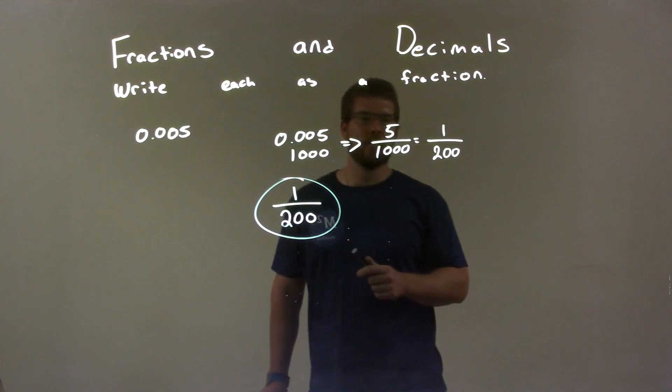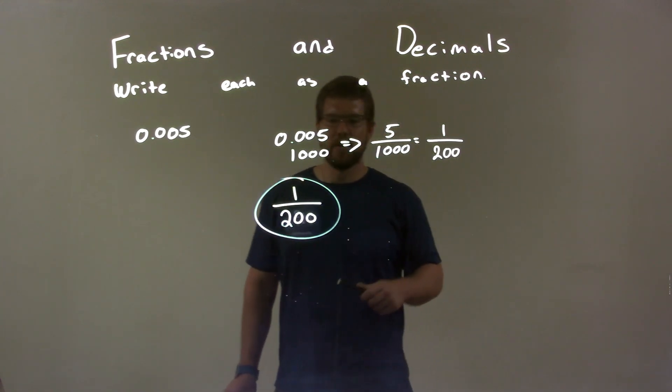I simplified that, divided the top and the bottom, numerator and denominator, by 5, and got 1 over 200. So again, our final answer is just 1 over 200.